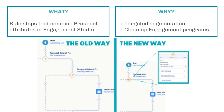In Engagement Studio we have complex rule steps, and what these are are rule steps that combine multiple prospect attributes. In Engagement Studio, rule steps narrow down prospects as they go through the program. Everyone starts at the top and then you start segmenting people out according to different attributes — for example, they're part of a list, they have a certain field value, or they have a specific tag — which helps us get more targeted with the actions that follow each pathway.